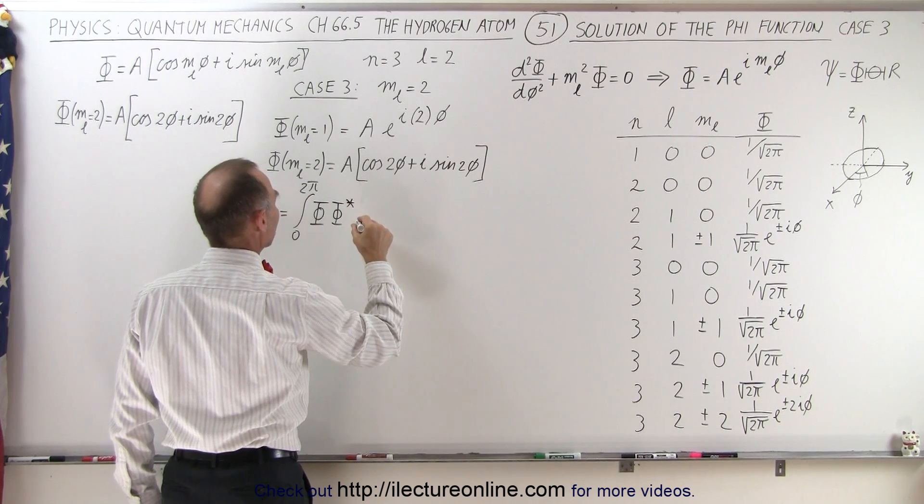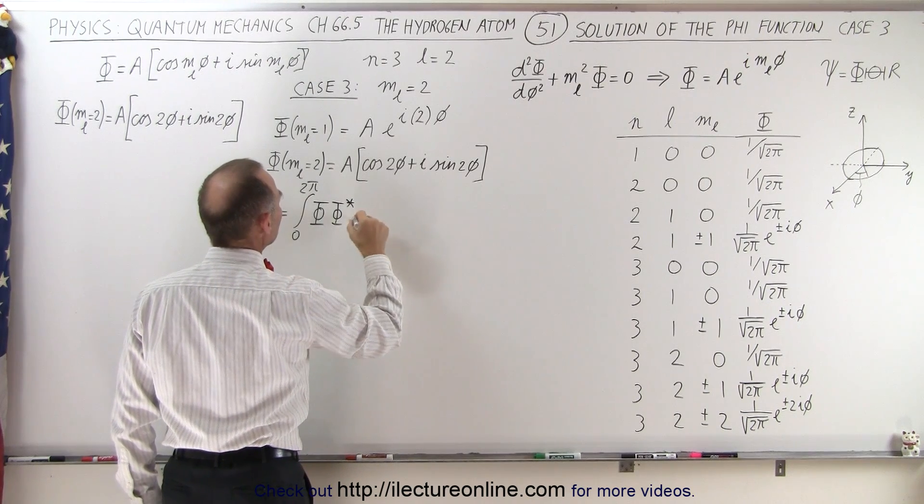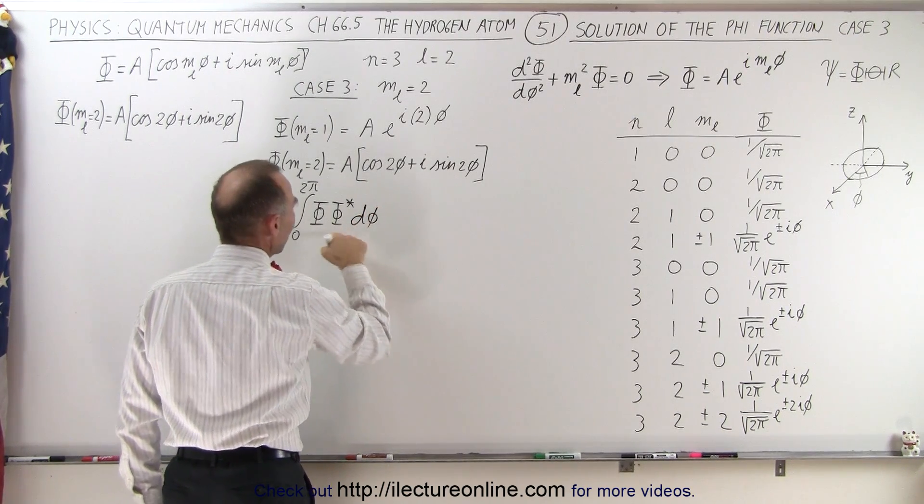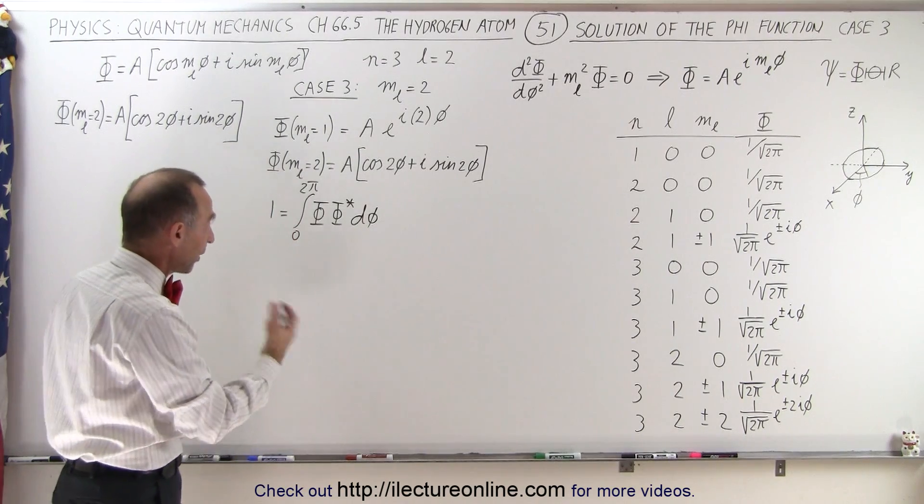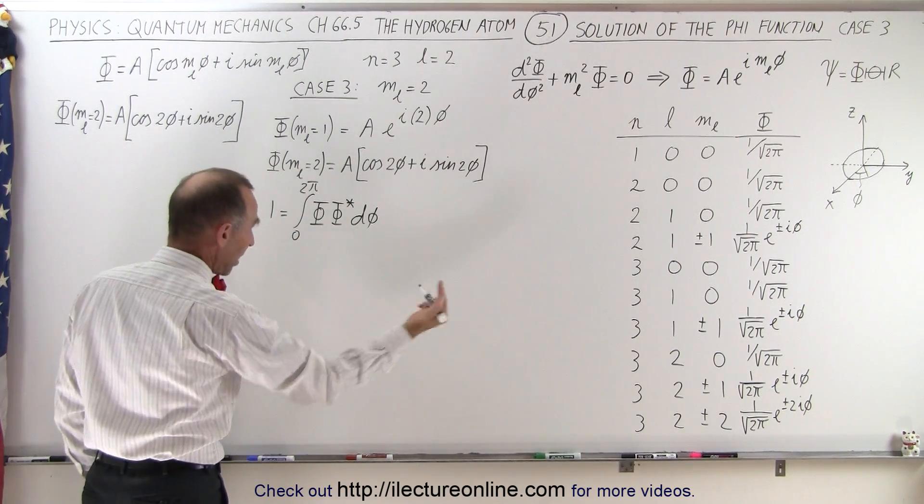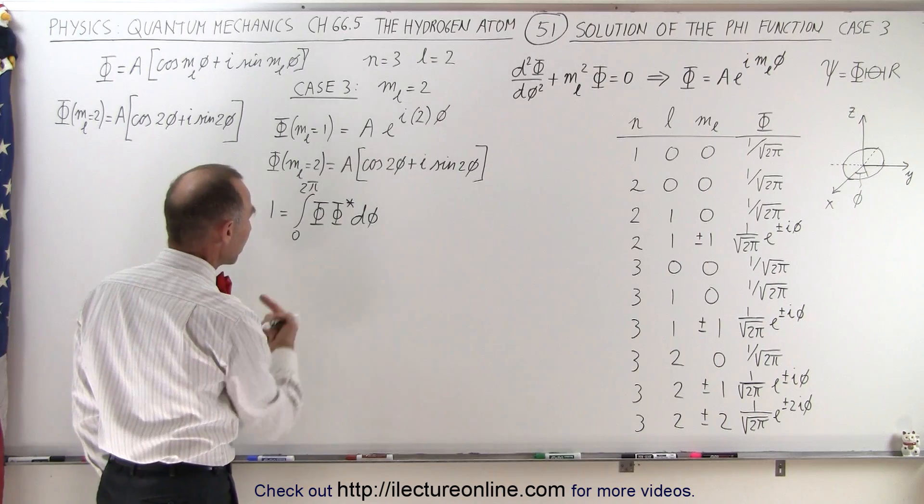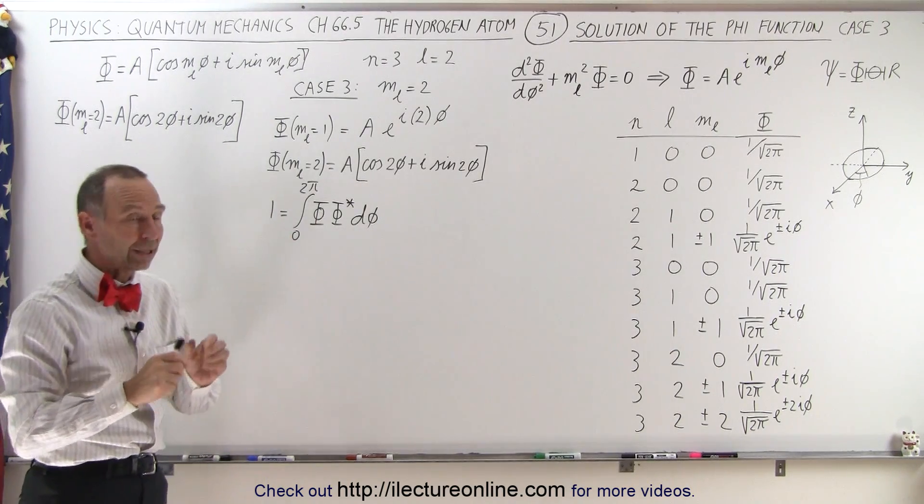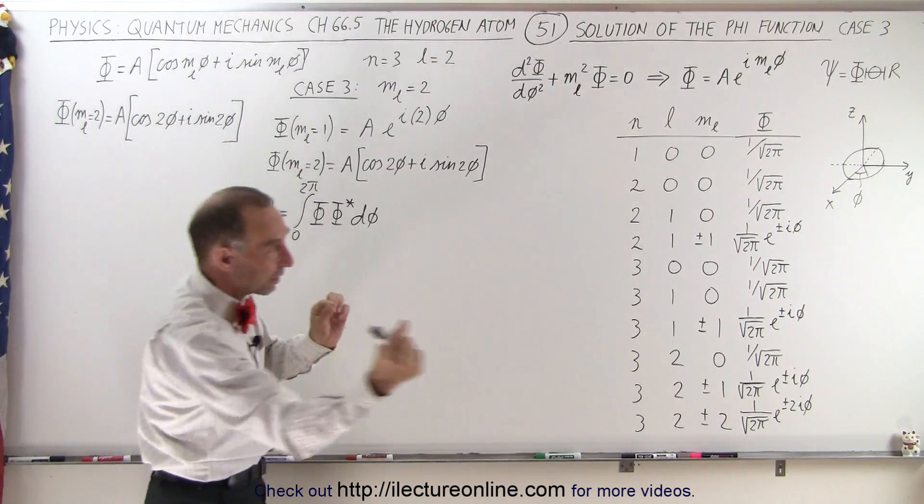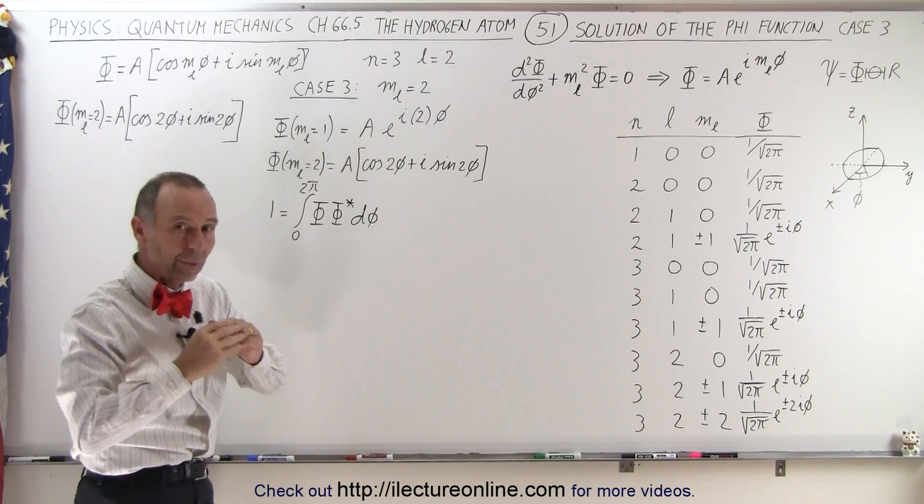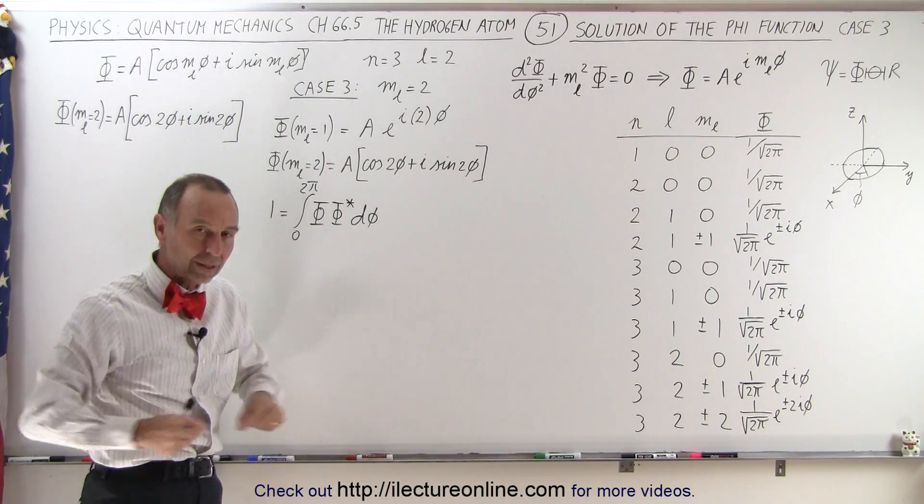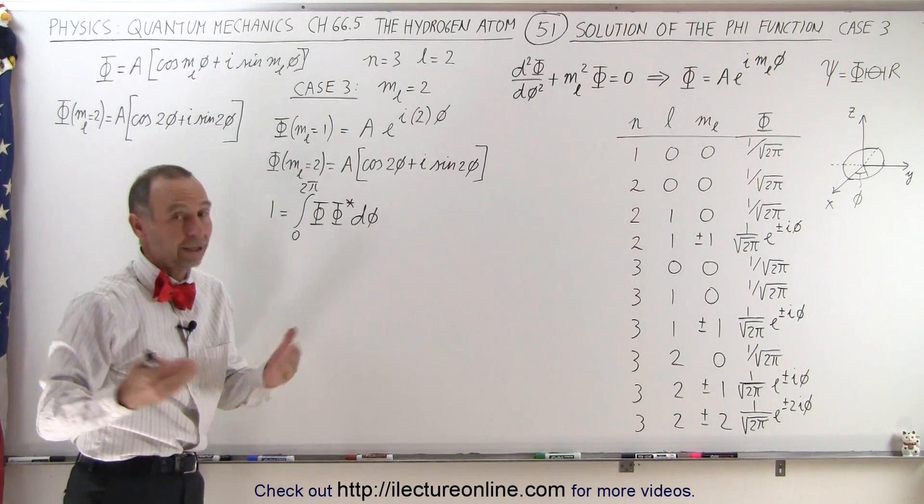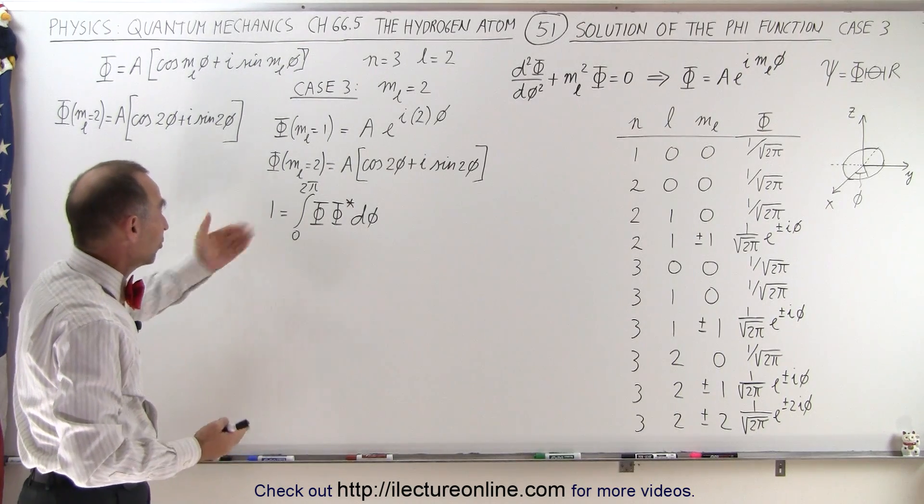And then we need a dφ. So this is essentially like squaring it, so we square the function, we integrate over the entire angle from 0 to 2π, and we set that equal to 1, because we know that the probability of the existence of the electron all the way around the azimuth, when you add up all the possible locations, the probability should add up to 1.